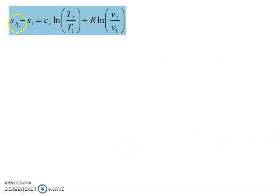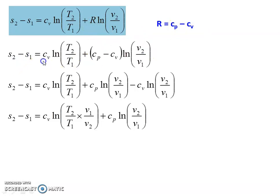Repeating the first equation: s2 - s1 = Cv ln(T2/T1) + R ln(V2/V1). Now, the gas constant R = Cp - Cv. Substituting, s2 - s1 = Cv ln(T2/T1) + (Cp - Cv) ln(V2/V1), which expands to Cv ln(T2/T1) + Cp ln(V2/V1) - Cv ln(V2/V1).